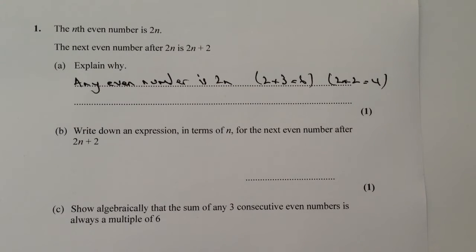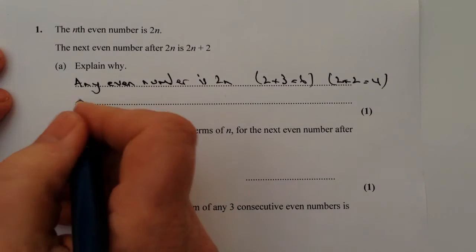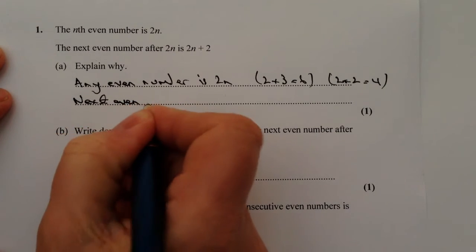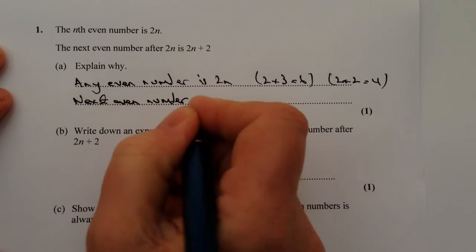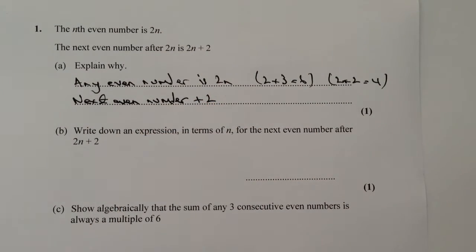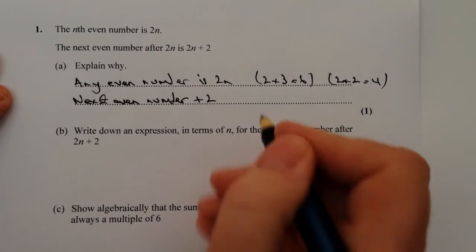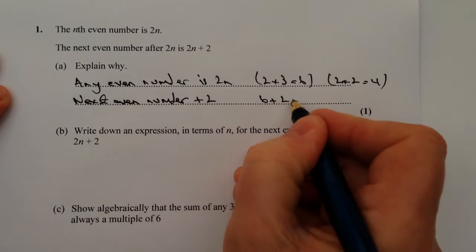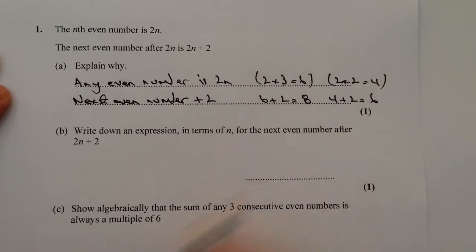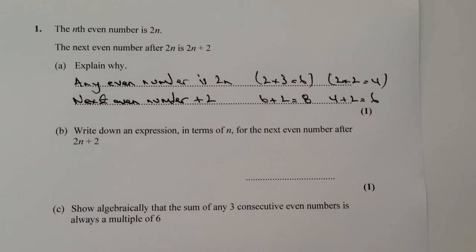So the next even number must be 2 more than 2n. Because if we look at the answers to those questions, we have 6 plus 2 equals 8, or 4 plus 2 equals 6. Therefore the next even number after 2n must be 2n plus 2.